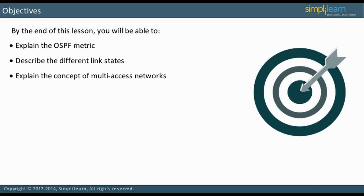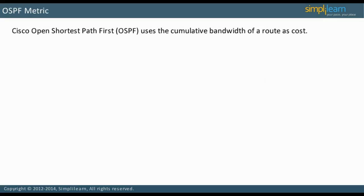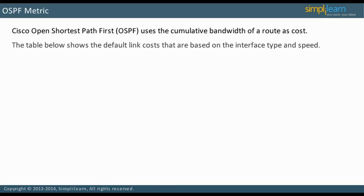Let us discuss the OSPF metric. The Cisco implementation of the Open Shortest Path First Routing Protocol uses the cumulative bandwidth of a route as cost. By default, cost for a single router interface or link is calculated as 10 to the eighth power divided by the bandwidth on the interface.